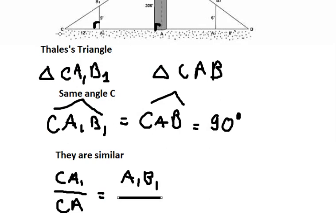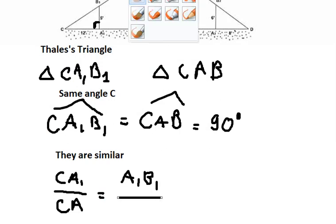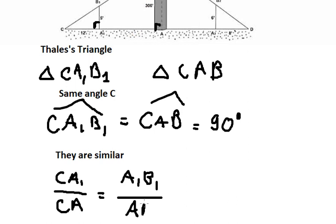Now we want to find CA. Rearranging the equation, CA equals CA1 times AB divided by A1B1.